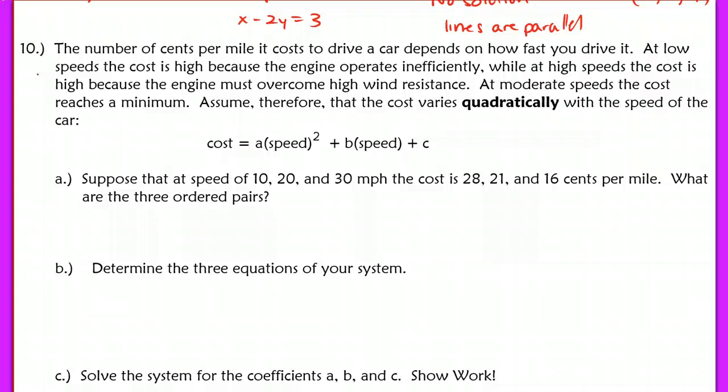When you're at moderate speeds, the cost reaches a minimum. If somebody drives their car like a maniac at high speeds, they're usually burning a lot of gas. If you drive super slow, same thing, you're costing a lot of gas. But your gas mileage is actually best when you're driving at moderate speeds.